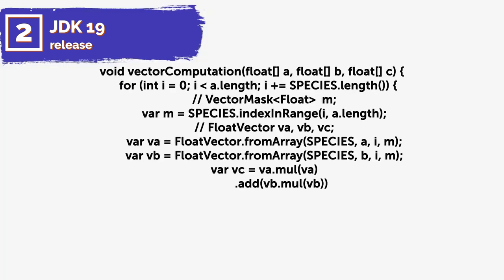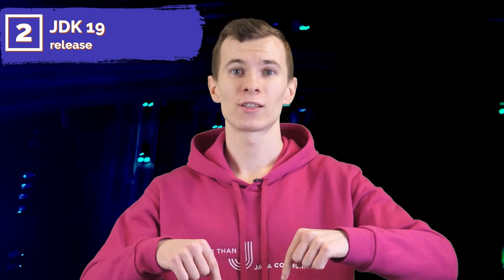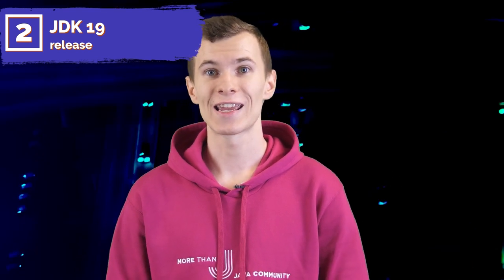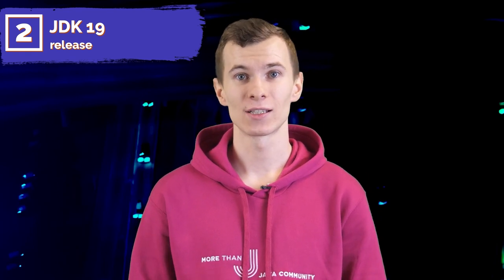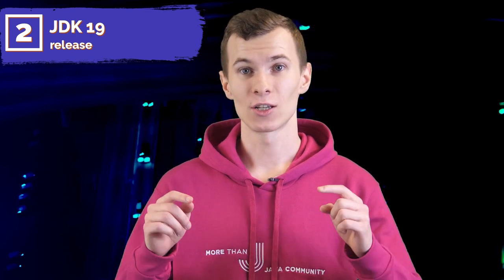A fourth incubation of a vector API that would express vector computations that reliably compile at runtime to optimal vector instructions on supported CPU architectures. The vector API is from Project Panama, which aims to enable simpler communications between native and JVM code. Make sure you check the description for the link to JDK 19. By the way, IntelliJ IDEA already added support for Java 19 features, and we will also drop the link to the IntelliJ IDEA blog post about supported features of JDK 19.